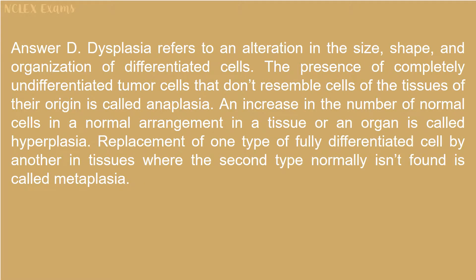Answer D. Dysplasia refers to an alteration in the size, shape, and organization of differentiated cells. The presence of completely undifferentiated tumor cells that don't resemble cells of the tissues of their origin is called anaplasia. An increase in the number of normal cells in a normal arrangement in a tissue or organ is called hyperplasia. Replacement of one type of fully differentiated cell by another in tissues where the second type normally isn't found is called metaplasia.